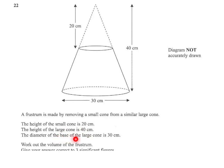The diameter of the base of the large cone is 30 cm. So that will tell us then that the diameter of the small cone would be half of 30, which will be 15 cm.